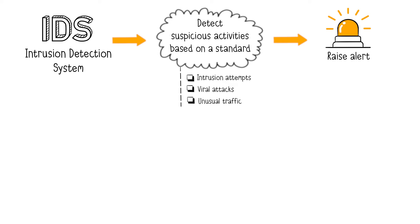IDS, which stands for Intrusion Detection System, is a system designed to detect intrusion attempts. The goal is to identify potentially malicious traffic, such as intrusion attempts, viral attacks, and unusual outgoing traffic. An IDS detects suspicious activity based on a standard — if activities deviate from the norm, the IDS issues an alert.